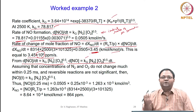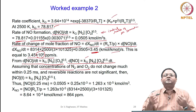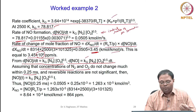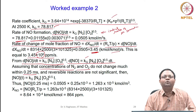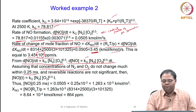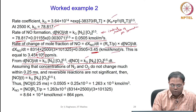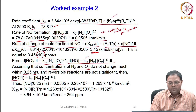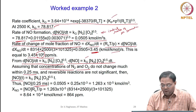Assuming the concentrations of N₂ and O₂ have not changed significantly within the short time of 0.25 milliseconds, they can be held constant at their initial values. Then integrating gives: [NO] at time t equals Kg × [N₂] × [O₂]⁰·⁵ × t.